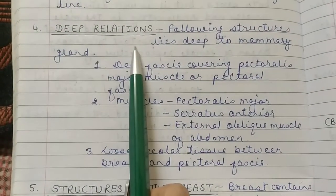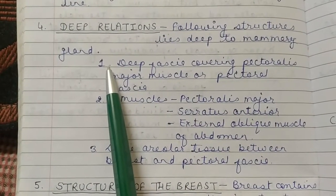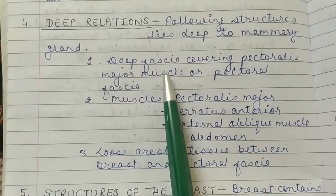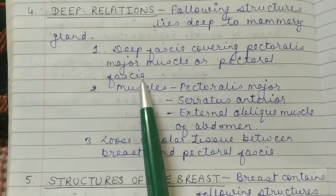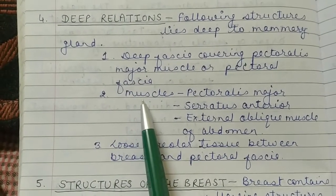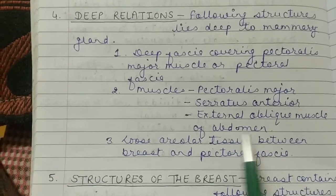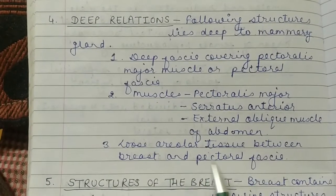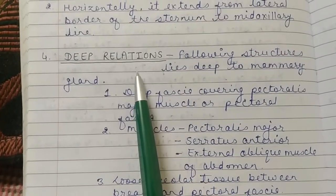The fourth point is the deep relations of the mammary gland. Following structures lie deep to the mammary gland: first, the deep fascia covering the pectoralis major muscle, also known as the pectoral fascia; second, muscles — pectoralis major, serratus anterior, and external oblique muscle of the abdomen; third, loose areolar tissue, present between the breast and pectoral fascia.